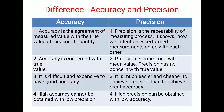The key differences between accuracy and precision: accuracy is the agreement of the measured value with the true value, whereas precision is the repeatability of the measuring process. Accuracy is concerned with the true value, while precision is concerned with the mean value. It is difficult and expensive to achieve good accuracy, whereas precision is easier and cheaper to achieve. High accuracy cannot be obtained with low precision, but high precision can be obtained with low accuracy.